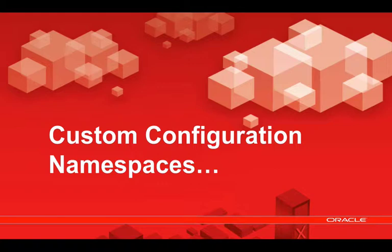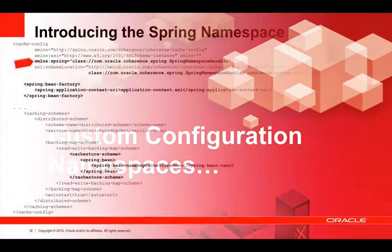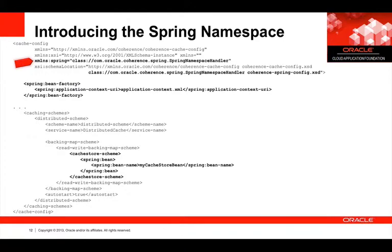Hence in Coherence 12.1.2 we introduced the concept of custom configuration namespaces. For those of you who've looked at the incubator — things like push replication — you may have seen this approach over the last few years. What we've actually done is migrated that concept and built it into Coherence, very much like you can do with frameworks like Ant and Maven, adding new extensions into the configuration. So let's look at what we've done with Spring.